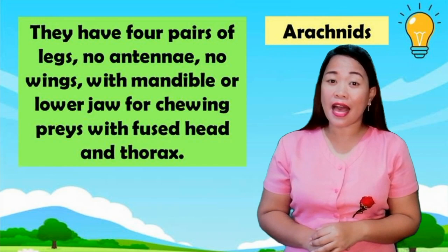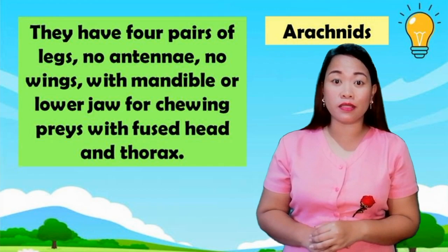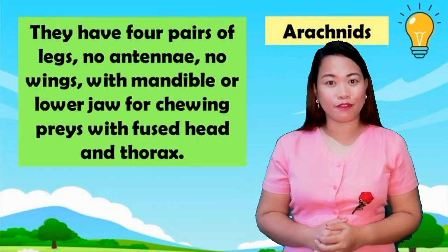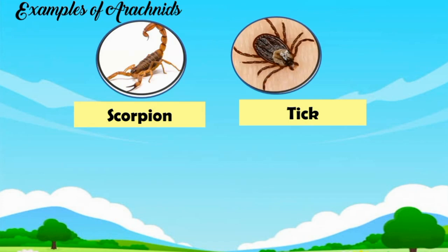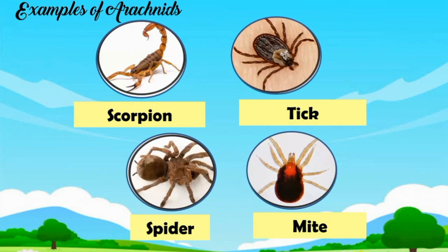Arachnids have four pairs of legs. They don't have antennae. They also don't have wings. But they have a mandible or lower jaw, which is responsible for chewing prey. They have a fused head and thorax. Examples of arachnids: scorpion, tick, spider, mite.